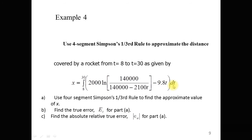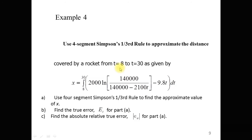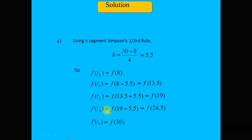For part a, using the four-segment Simpson's one-third rule, h = (b − a)/n = (30 − 8)/4 = 5.5. Putting t = 8 into the function gives f(t₀) = f(8). Then t₁ = 8 + 5.5 = 13.5, so f(t₁) = f(13.5).